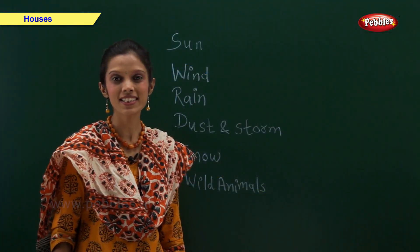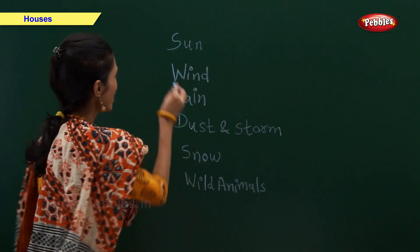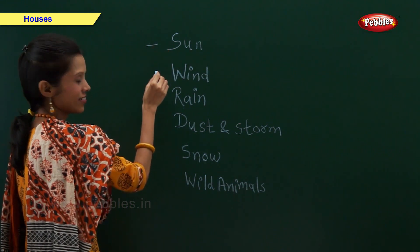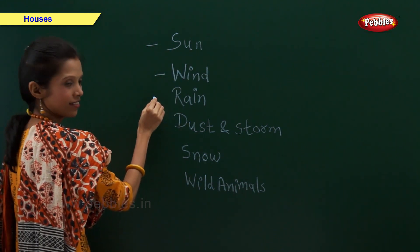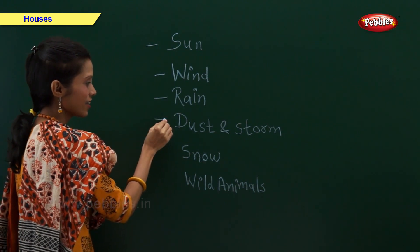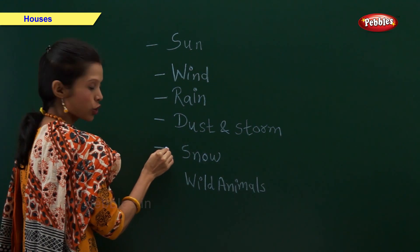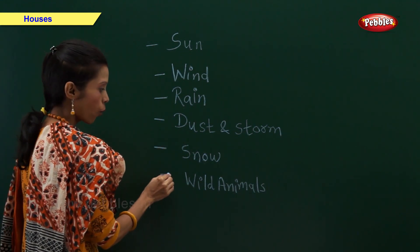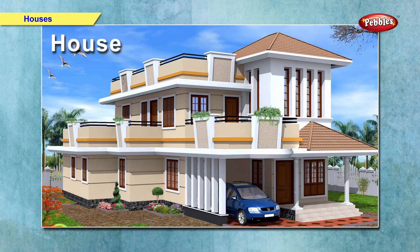A house keeps us safe from sun, wind, rain, dust and storm, snow, and wild animals. A house provides shelter to the family and protects it from thieves and enemies. We feel safe inside our house.